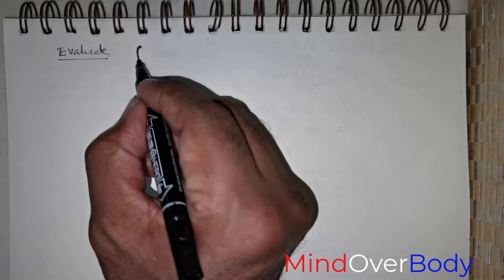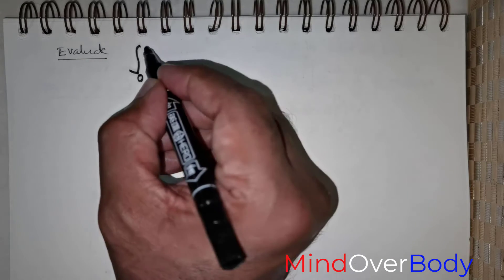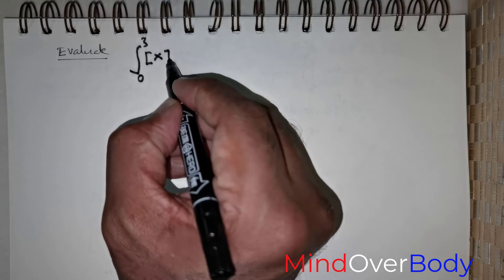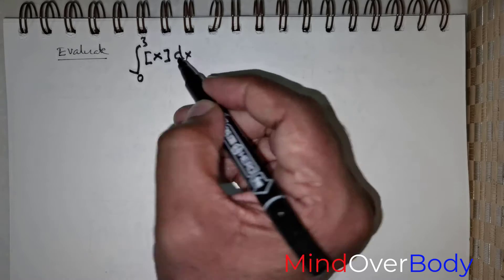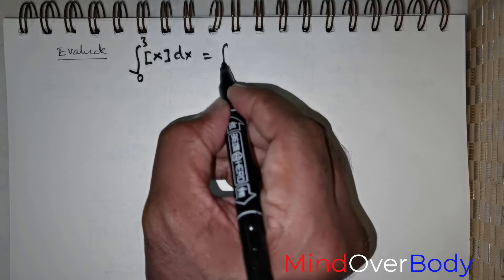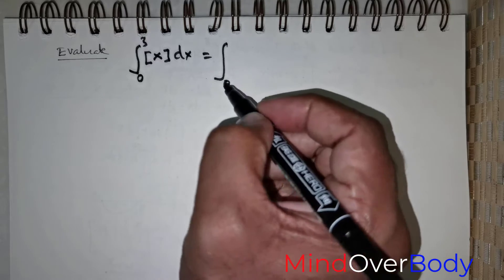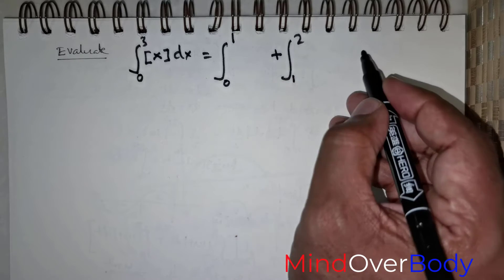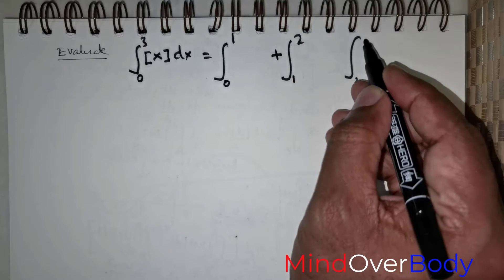Students, we are expected to evaluate integral 0 to 3, greatest integer function of x times dx. Now, this could be rewritten in this fashion, taking the integer quantity 0 to 1, positive 1 to 2, and then 2 to 3.